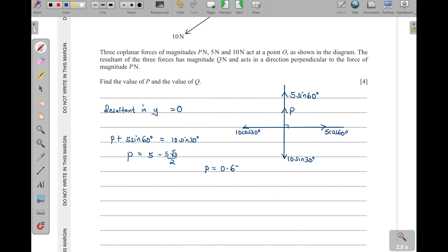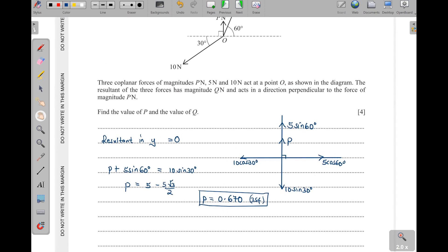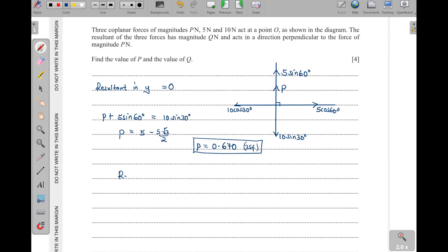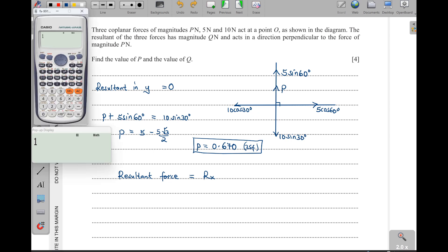Then next we have to find a value of Q. They said the resultant of the forces has magnitude Q, so the resultant force is actually going to be equal to Rx, the resultant in the X direction. So we need to see this one and this one - which one is bigger?